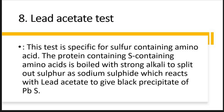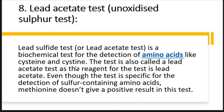The protein containing sulfur amino acids is boiled with strong alkali to split out sulfur as sodium sulfide. This sodium sulfide then reacts with lead acetate to produce a black precipitate of lead sulfide. Another name for this test is the lead acetate test, as the reagent used is lead acetate.